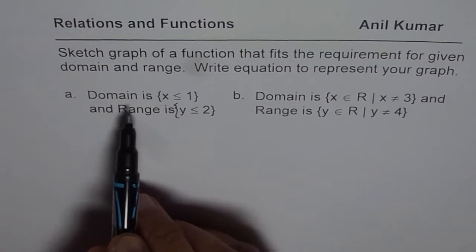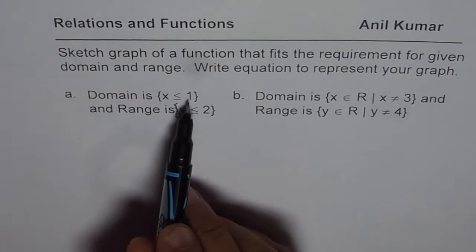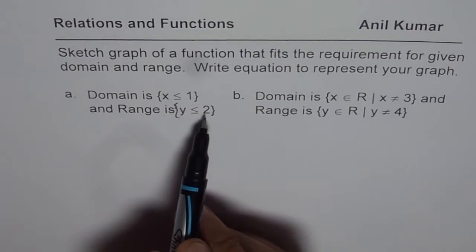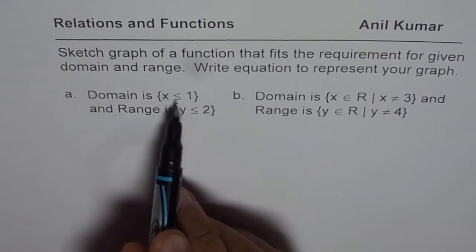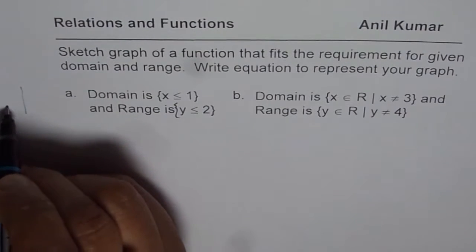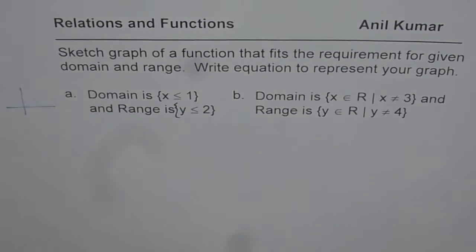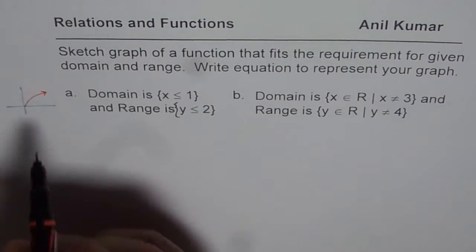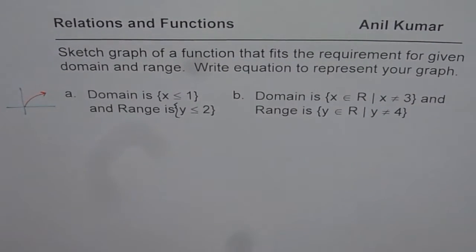The first one here is, domain is less than equal to 1 and range is less than equal to 2. Since there are restrictions on both domain and range, a good function to consider is the square root function. Square root function is the one which has a restriction on both domain and range.